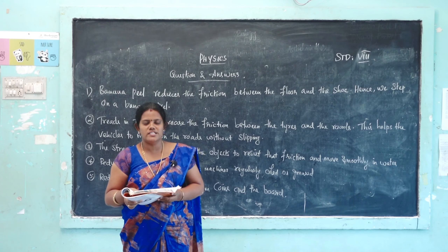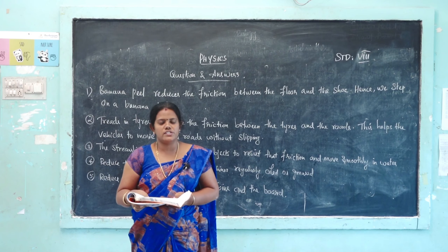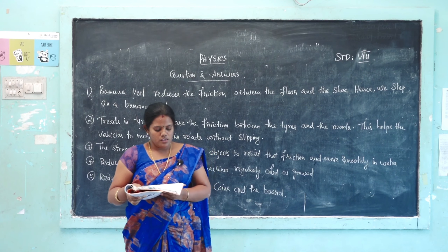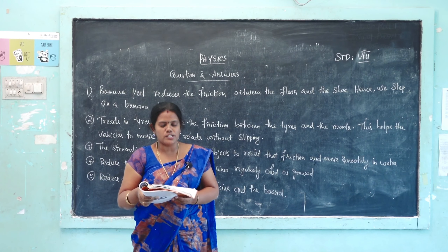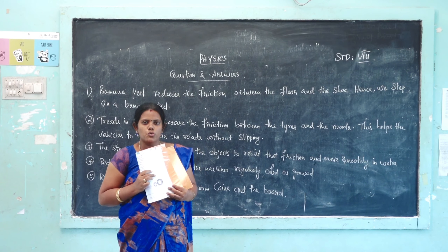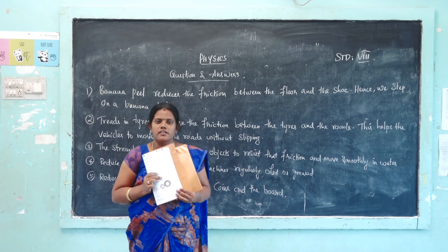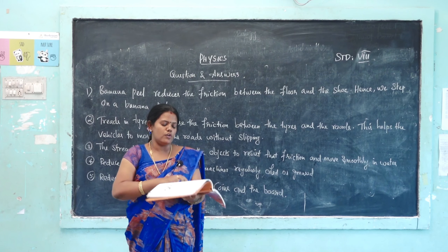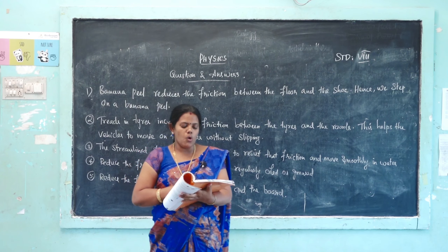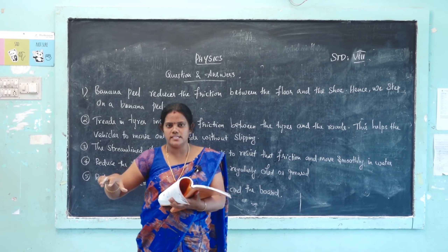Fourth: friction is always helpful to us. This is false, because sometimes friction produces negative effects. Fifth: grease and oil are used as lubricants. This is true — grease and oil are always used as lubricants in machines.